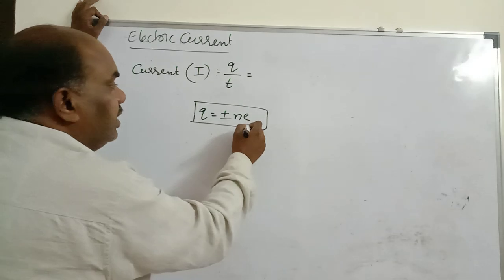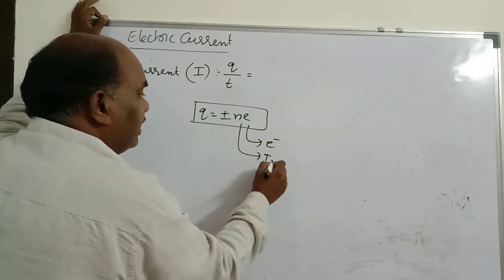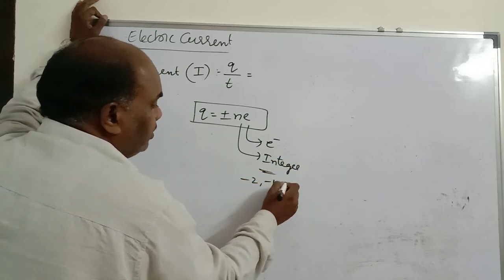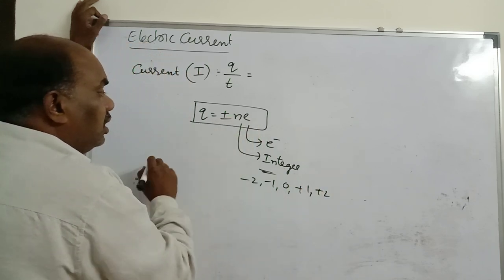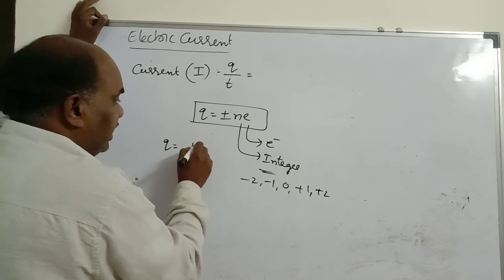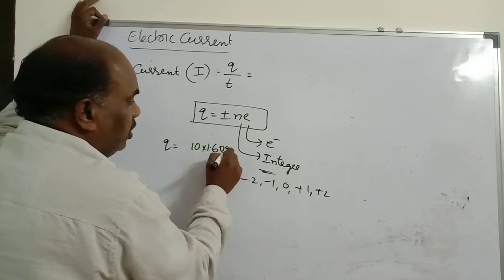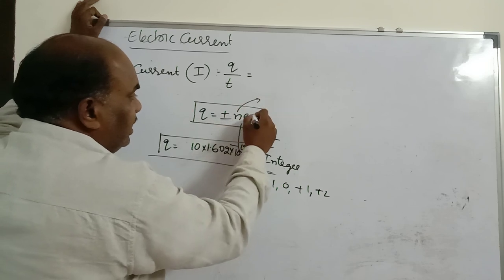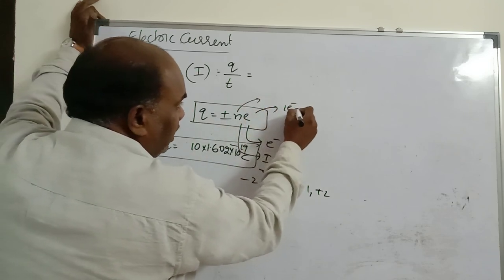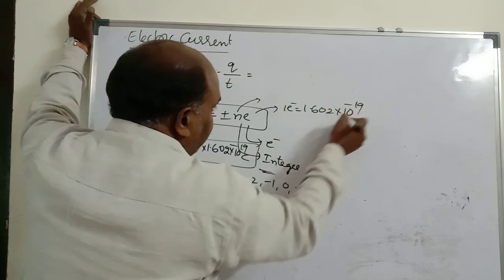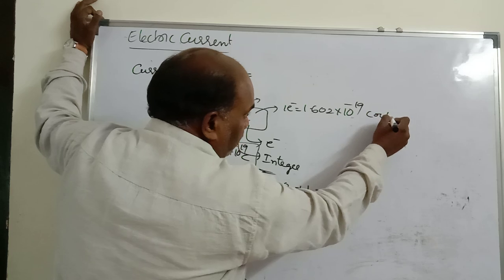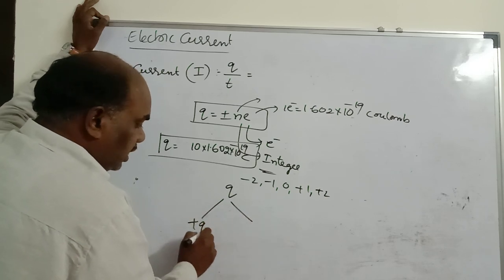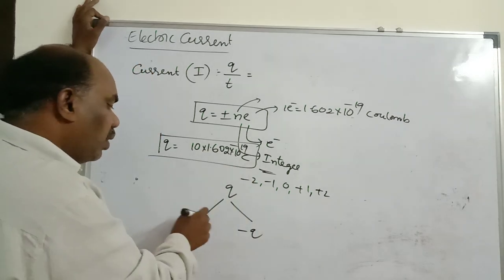Charge is the flow of electrons. Q equals plus or minus NE, where E means electrons and N is an integer — charge is quantized. For example, the charge of 10 electrons is 10 multiplied by 1.602 × 10⁻¹⁹ coulombs. This is the charge of one electron. N is an integer that can be negative, positive, or zero. The unit of charge is coulomb.